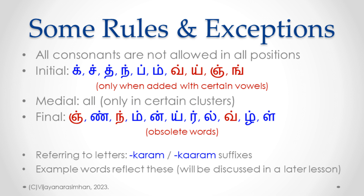As you can see on the slide, the six consonants Ka, Cha, Tha, Na, Pa, Ma can come in the initial position with all 12 vowels. For example, taking Ka and combining it with all 12 vowels gives 12 vowel-consonant combinations. Similarly Ka, Cha, Tha, Na, Pa, Ma can all appear with all 12 vowels in the initial position of a word.